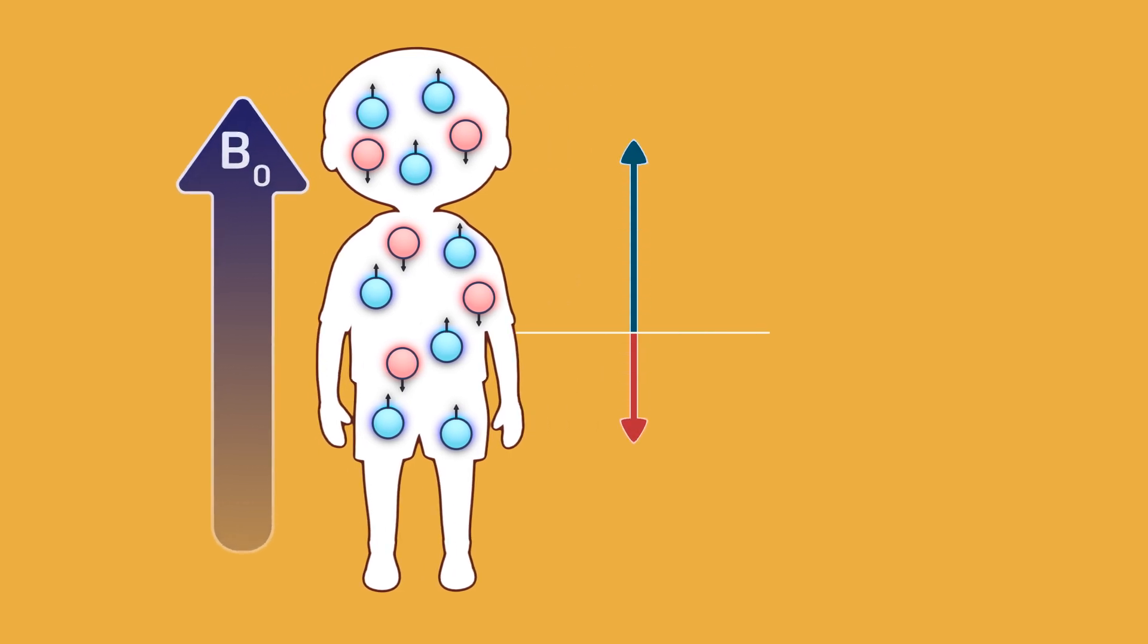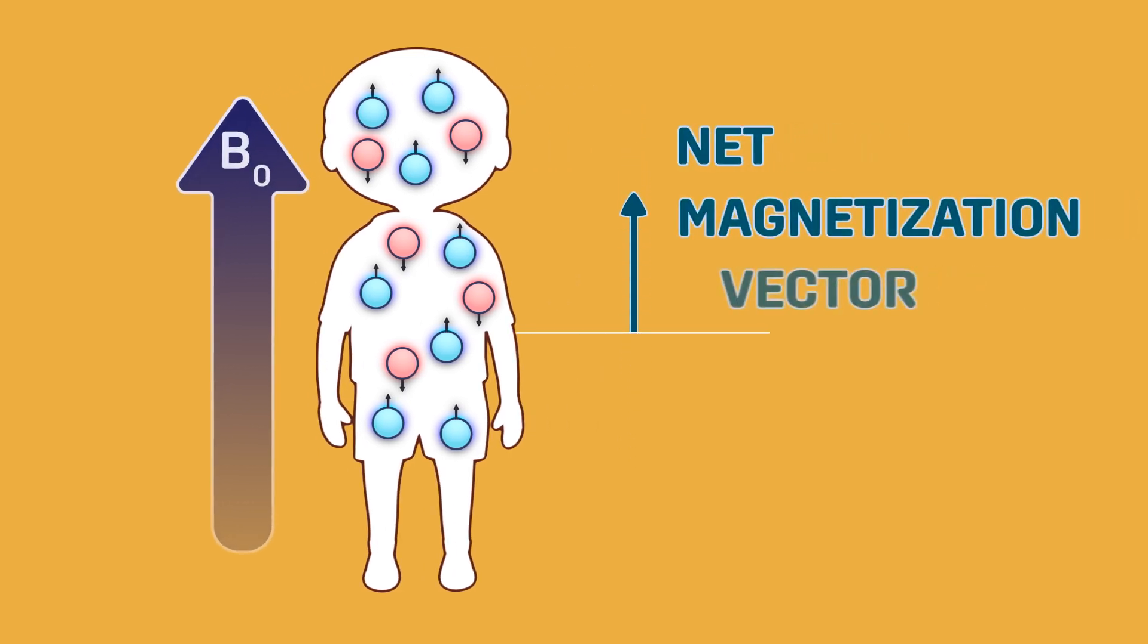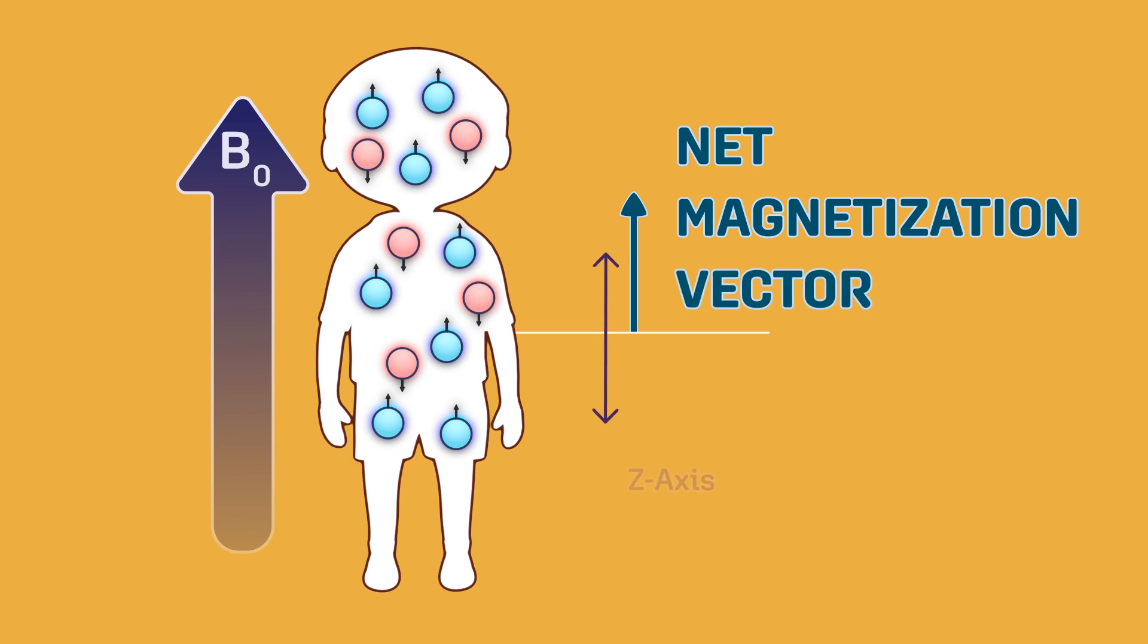This generates what is referred to as the net magnetization vector. We can imagine this net magnetization along the z-axis, the long axis or length of the patient's body.